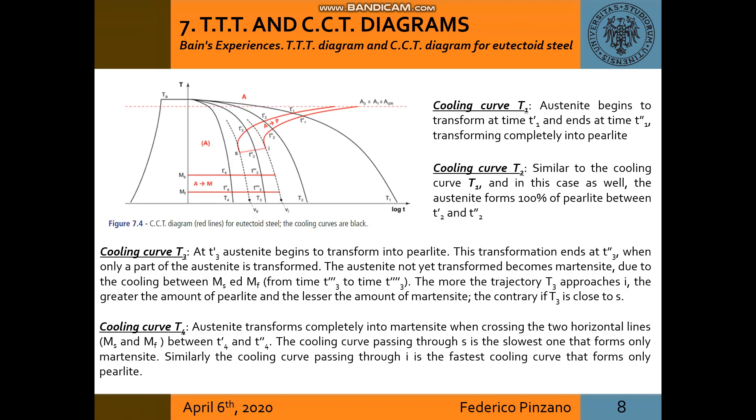Cooling curve T1: austenite begins to transform at time T1 first and ends at time T1 second, transforming completely into pearlite. Cooling curve T2 is similar to the cooling curve T1.